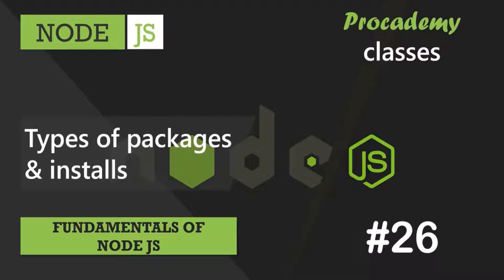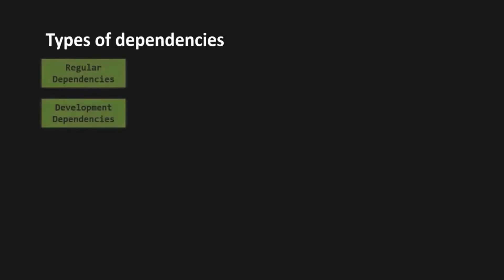So in this lecture, we are going to see how we can install packages from the NPM repository. But before that, let's understand what are the different categories in which we can divide a package. When we install a package, it can be classified into a regular dependency or a development dependency.